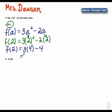So f(2) is equal to 3 times 4, which is 12, minus 4, and f(2) equals 8.